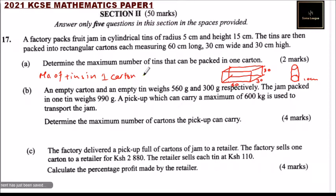Here horizontally you pack six because each has a diameter of 10. Here you pack three, so you multiply by three. So the first row you have 18, and you multiply by two because they have two layers. So it means that the number of tins equals to 36 tins.